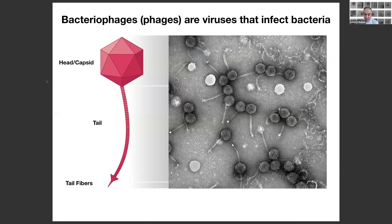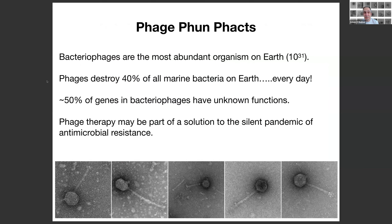Just in case you've never heard of a bacteriophage, bacteriophages are viruses that infect bacteria. A few fun facts: these are considered the most abundant organism on Earth, with a predicted 10 to the 31 bacteriophages on the planet. They're deeply involved in ocean and terrestrial ecology. It's predicted that in the oceans, 40% of all marine bacteria are destroyed by phages every day.